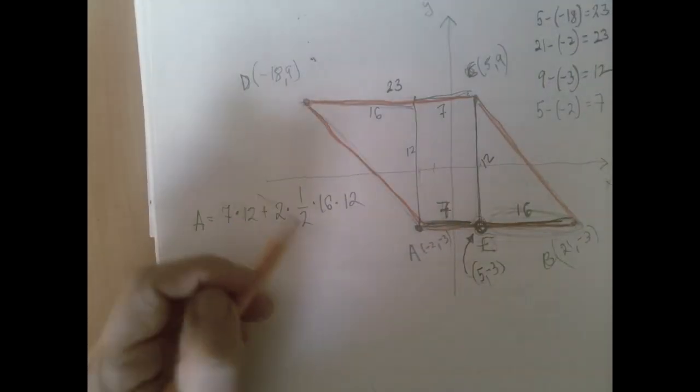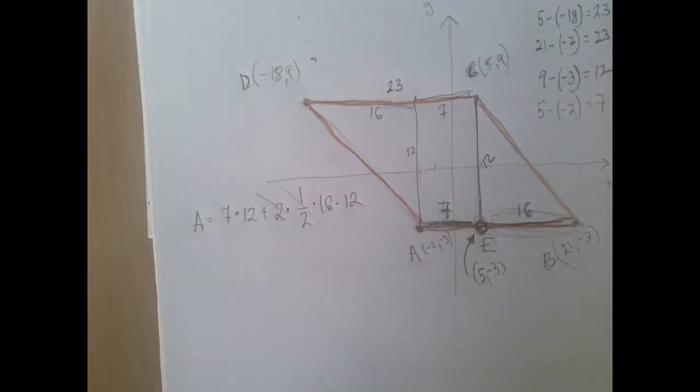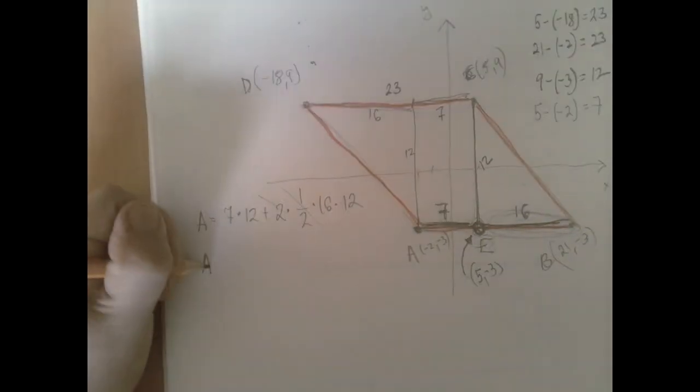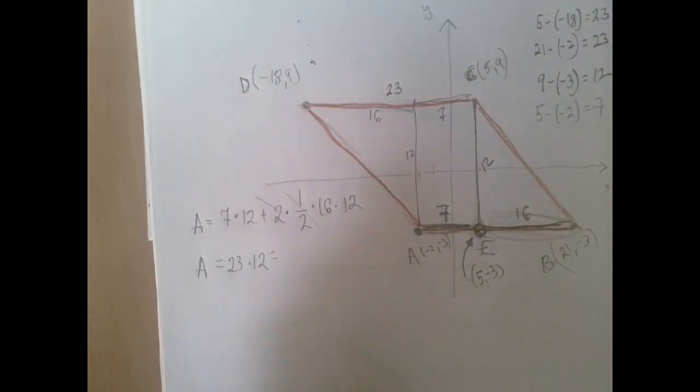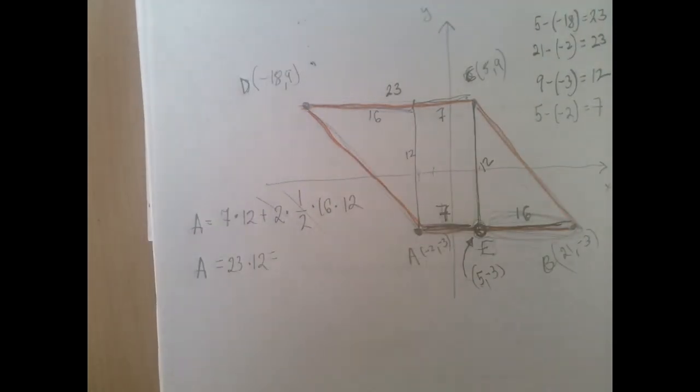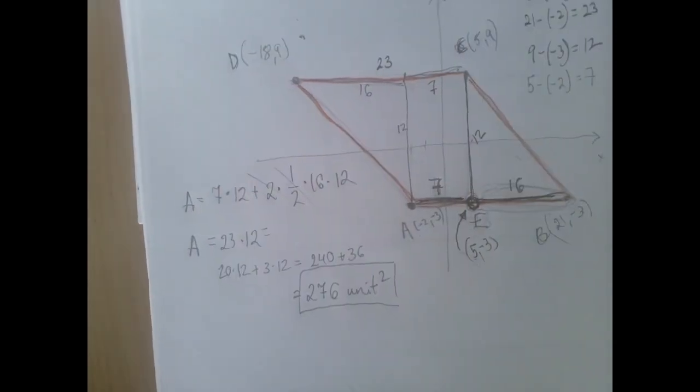So 2 and a half cancel out each other. And A equals, notice I just factored out 12 just for the fun of it. And we recovered this number 23, which is interesting. So the area is 276 units squared.